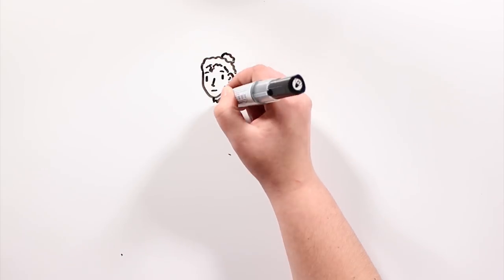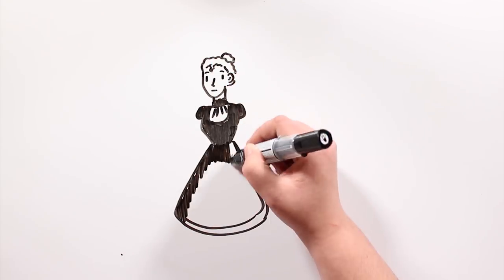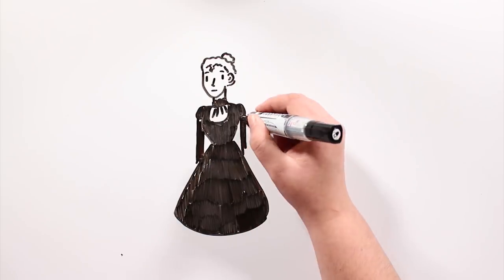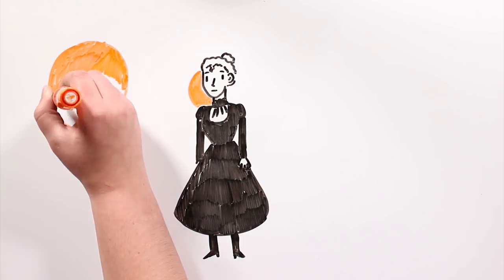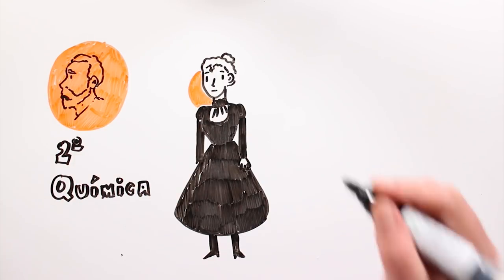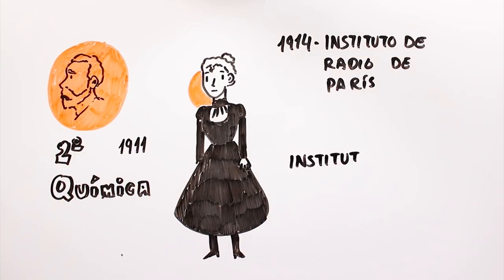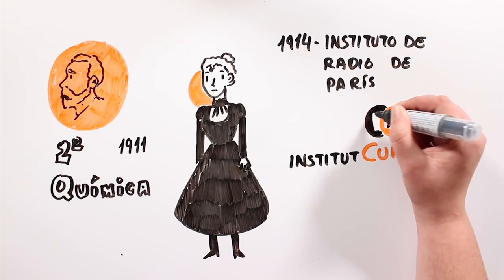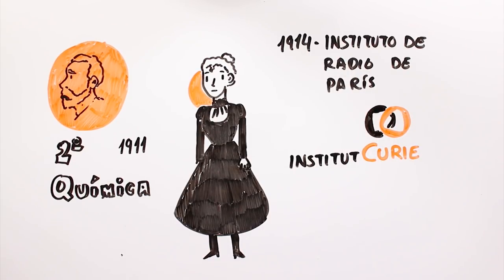In 1911, she got her second Nobel Prize, Chemistry this time, thanks to her research on radium and its compounds. She was the first person to be awarded two Nobel Prizes. She was named director of the Radium Institute in Paris in 1914, and the Curie Institute was founded.